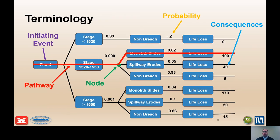A simple flood event tree with two potential failure modes will be used to explain basic terminology for event tree analysis. The initiating event on the left side of the event tree is a flood. The flood hazard has been partitioned or discretized by stage into three load ranges in the second column. The probability of the flood being within those load ranges is also shown. Given a flood stage exceeding elevation 1520, two potential failure modes can occur as shown in the third column: monolith sliding and spillway erosion. The conditional probability of failure given the flood is shown for these events.